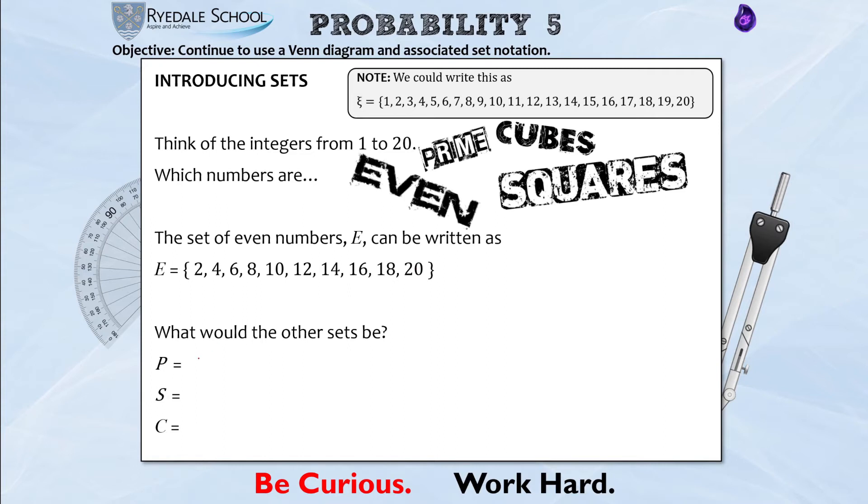So again using the numbers 1 to 20, what would the subset of prime numbers look like? So which numbers from 1 to 20 are prime? Well let's remember 1 isn't, so it is 2, 3, 5, 7, 11, 13, 17 and 19. Close with a curly bracket.